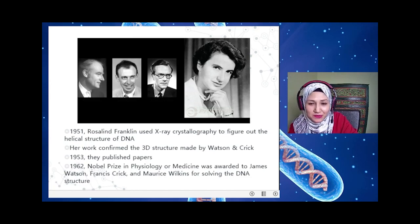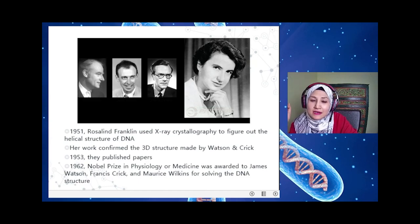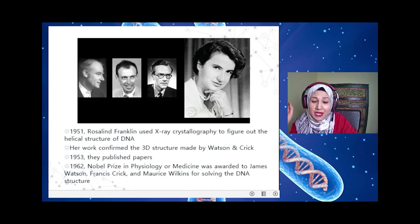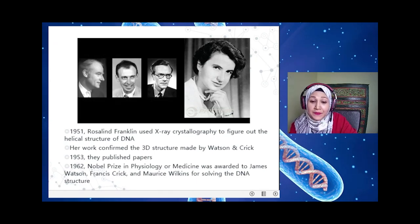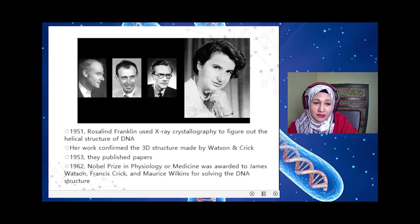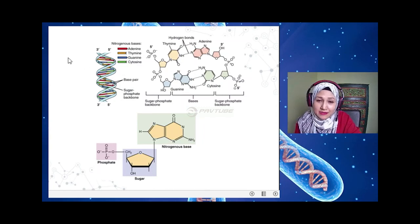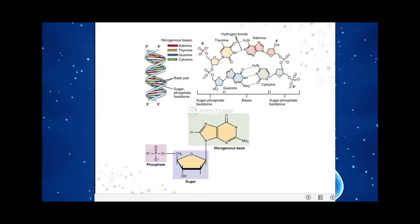There is a controversial story behind the discovery. In 1951, Rosalind Franklin used X-ray crystallography to figure out the helical structure of DNA; the famous image is called Photo 51. Her work was confirmed by the 3D model built by James Watson and Francis Crick, who published a paper on the helical structure of DNA in 1953. In 1962, Watson, Crick, and Maurice Wilkins were awarded the Nobel Prize in Physiology and Medicine for solving the DNA structure.